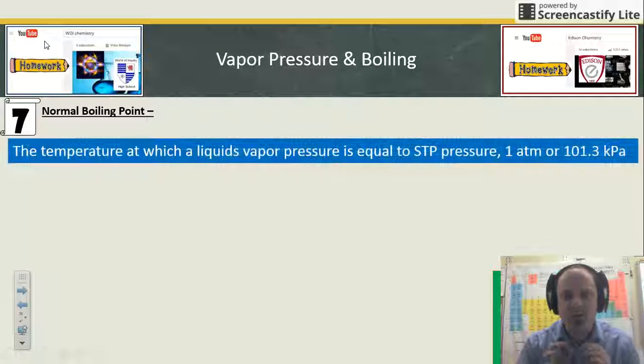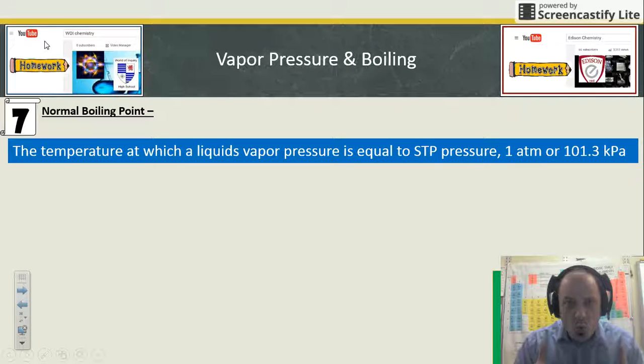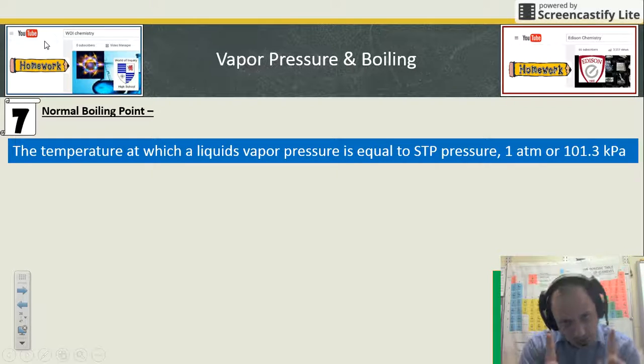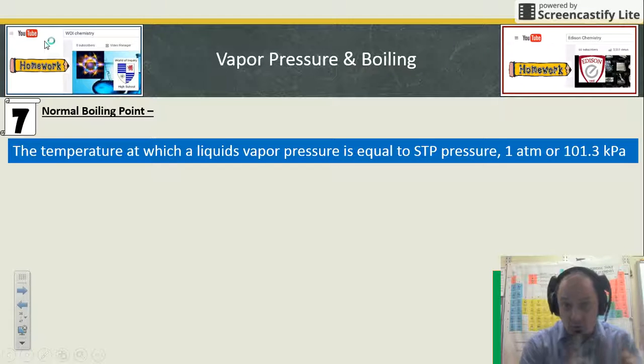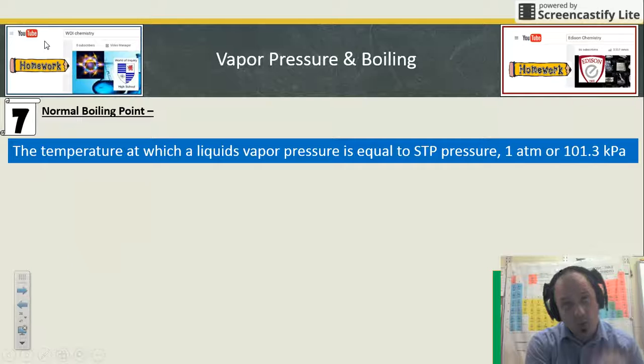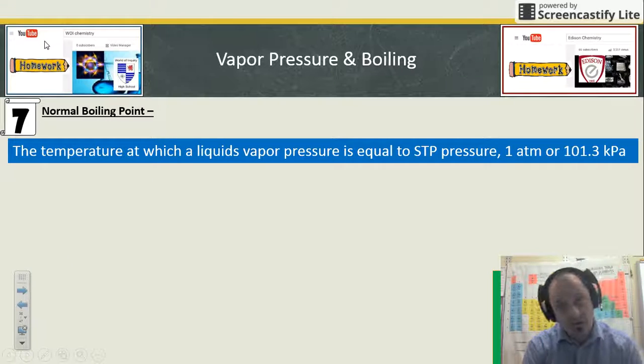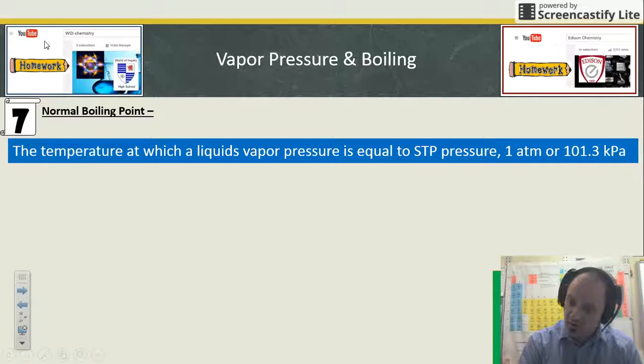The normal boiling point is the temperature at which things would boil under one atmosphere of pressure. That's normally their boiling point. Normal boiling point means normally what temperature would they boil at? Well, normally is one atmosphere. So this is the temperature it would boil at one atmosphere.